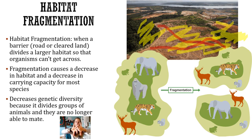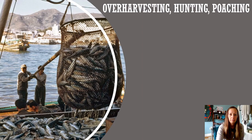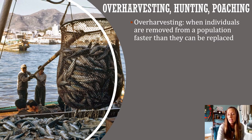Habitat fragmentation decreases the carrying capacity for most species because the habitat can't support as many species as before. You end up losing genetic diversity — remember, genetic diversity is the differences in the DNA of a species — because those species can no longer interbreed with each other. You have two separate breeding groups, and it decreases genetic diversity because they can no longer share their genes. We're making small pockets of animals rather than letting them mate altogether.